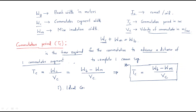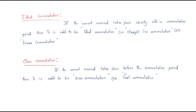Depending on the commutation process, there are three types: first, ideal commutation; second, over commutation; and third, under commutation. Ideal commutation is when the current reversal — the change from +IC to −IC — takes place exactly within the commutation period. It is also called straight-line or linear commutation.